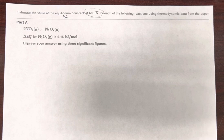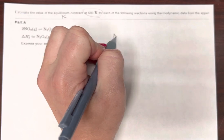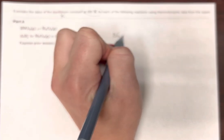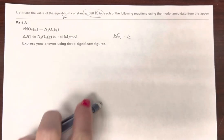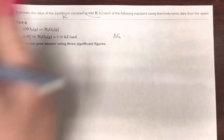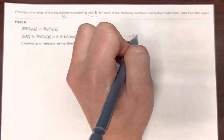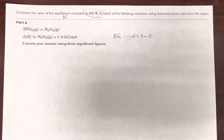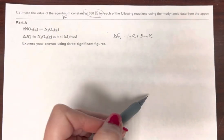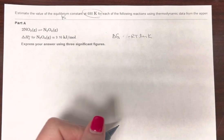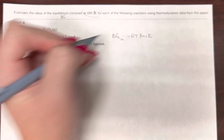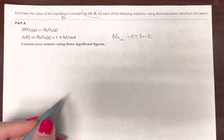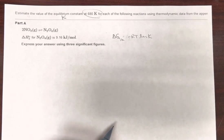Alright, so we know that delta G equals negative RT ln K. We know what R is, we're given a temperature, and we need to find delta G of a reaction. So it says using thermodynamic data.